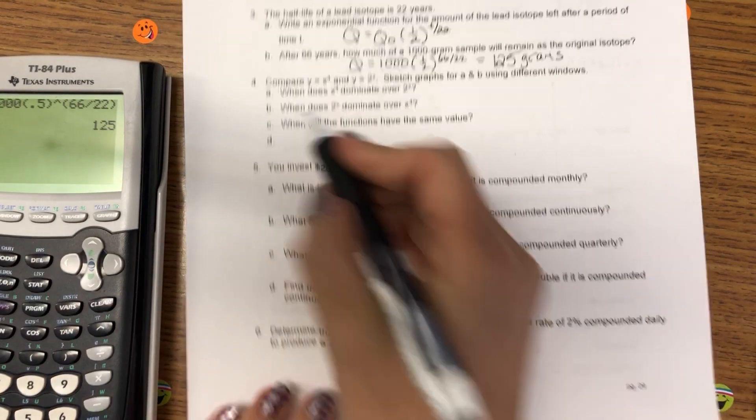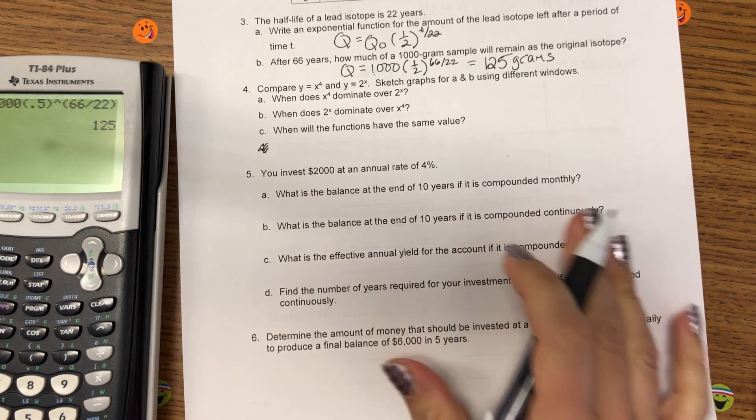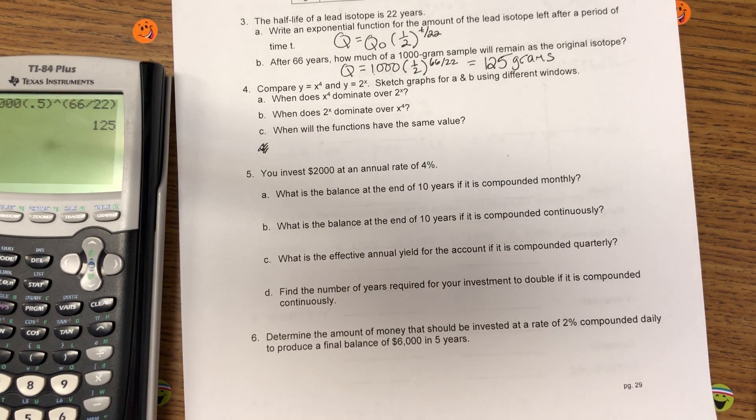If you have an older calculator like me, don't forget you need to group your exponent in parentheses and always put units on your answer. Alright. For number four, there's no part D. When does X to the fourth dominate over 2 to the X? When does 2 to the X dominate?